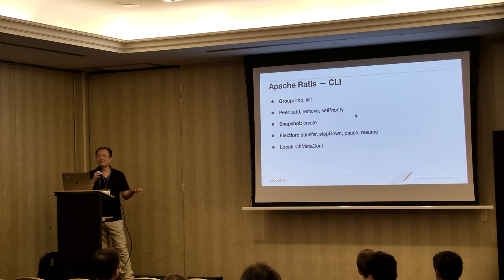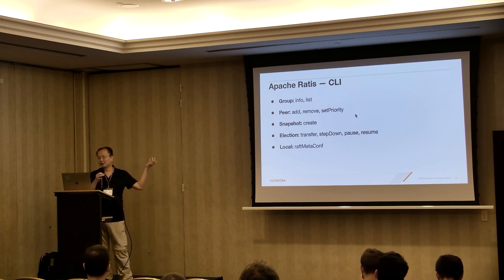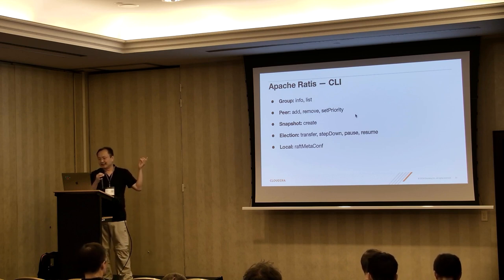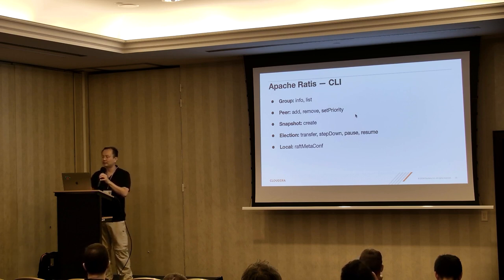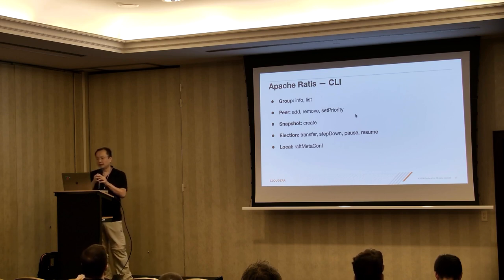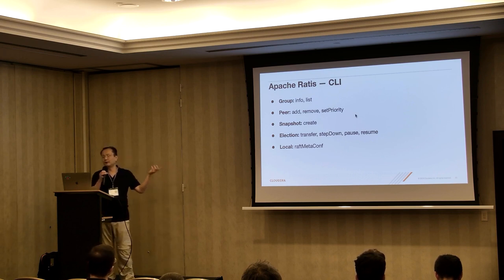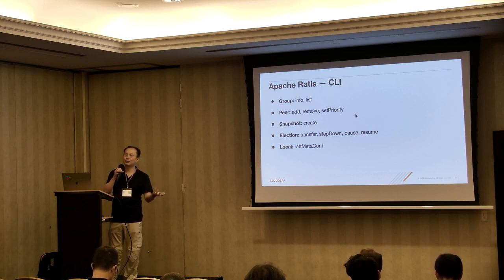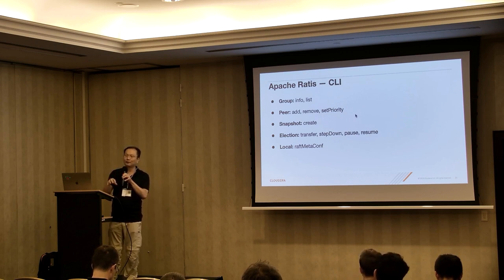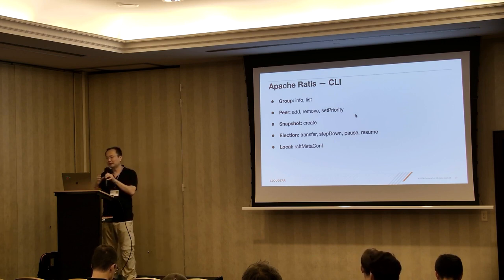We also have a command line interface. You can check the group, get information, get the listing, and you can also change a peer using the command line. You can trigger snapshot creation. For leader management, you can transfer the leader from one machine to another, or tell the leader to step down so a re-election chooses another leader. We also have a new command called local fix for fixing the WAF configuration metadata, because in some use cases people want to change the IP address or other peer information — since it's written in the WAF conf, even if they change it externally it won't work, so they need to update the meta conf as well.